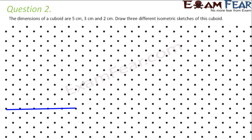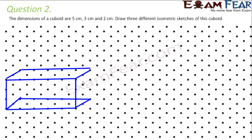In the first sketch, we consider 5 cm as the length drawn horizontally and 3 cm as the breadth, drawing one rectangular front face of the cuboid. We then draw the depth of 2 cm from all four vertices and complete the back face rectangle. This gives one view of the cuboid — as seen from somewhere between the front and the side.